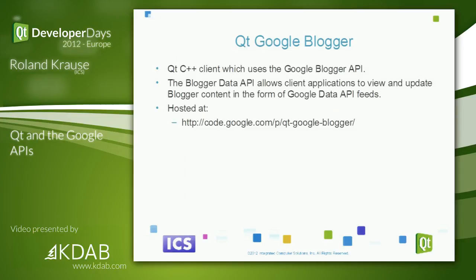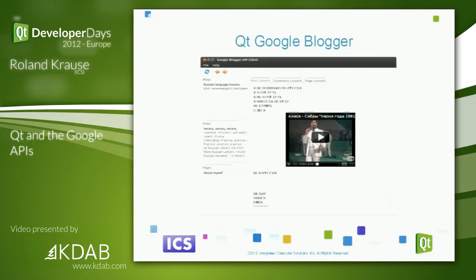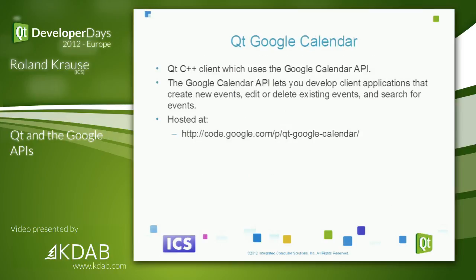You can then blog about the whole thing — combining your breadcrumb path with maps and pushing it all into Google Blogger, which is the next set of APIs provided. This is a C++-based client using the Blogger API. An important feature is that you can play YouTube videos directly from within the blog client, since having YouTube videos in your blogs is an important part of blogging.